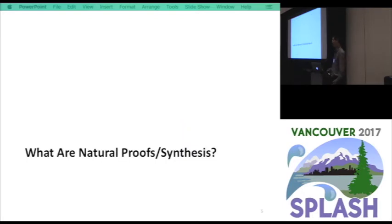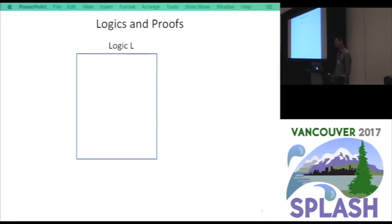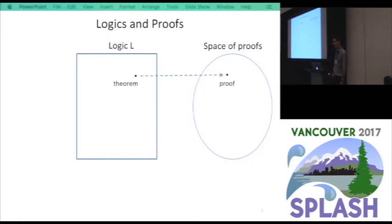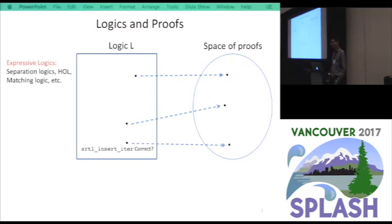So the idea is about natural synthesis. What are natural proofs and natural synthesis? In the most general sense, natural proofs is a proof methodology. A logic is a language in which you can talk about theorems. To prove a theorem, it's a process of searching for a proof in the space. If the proof is found, then the theorem is correct. For different theorems, you will find different proofs. If the logic is expressive enough, you can talk about the verification condition for sorted list insertion and find the proof from the search space. This is an approach taken by a lot of expressive logics, like separation logic, higher order logic, matching logic, etc. But as you can imagine, the logic is expressive, so the search space is also large. The proof search cannot be automated.